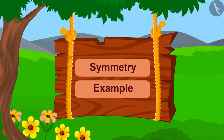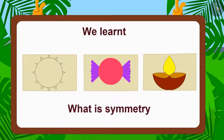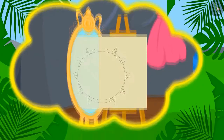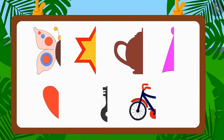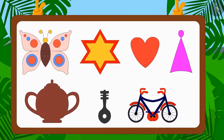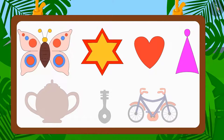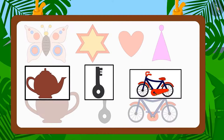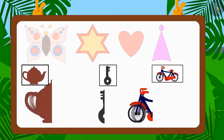In the previous video, we learnt what is symmetry. Do you remember Shere Khan's magical mirror? Can you identify which of these incomplete images will become a complete image in the mirror? These are the images that will be complete in the mirror because they are made of two similar parts. And these images will not be complete in the mirror because they are not made of two similar parts.